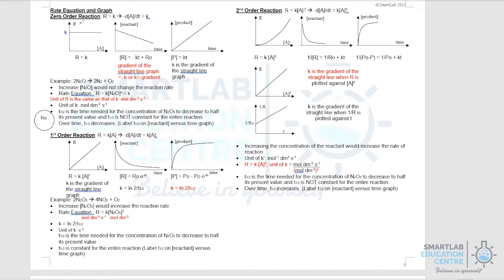Let's start with zero-order. Given that rate equals K, when you sketch reaction rate versus concentration it's a horizontal line. For the reactant-time graph, the gradient is the reaction rate — since reaction rate is constant, the gradient is constant, giving a straight line with a negative gradient. For the product-time graph, it is a straight line with a positive gradient. Note that for both graphs, the magnitude of the gradient equals the rate constant K.